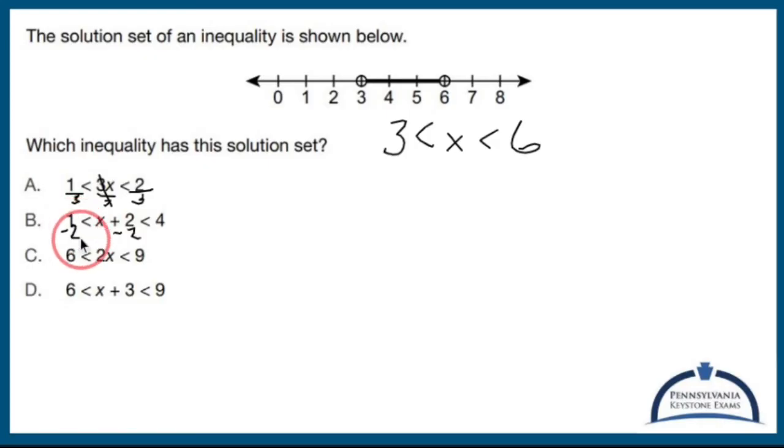If I subtract 2 from all three parts, I get 1 minus 2, which is negative 1, is less than x, is less than 2, not what I want.